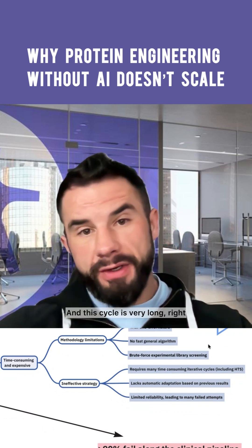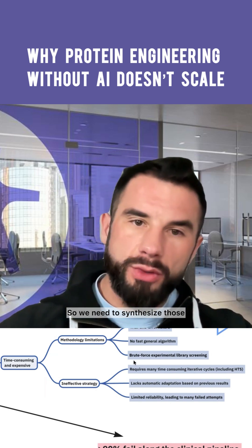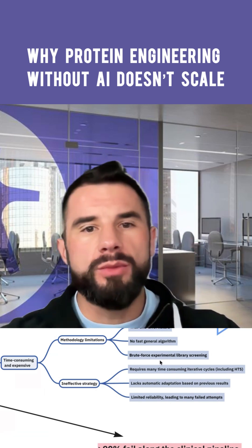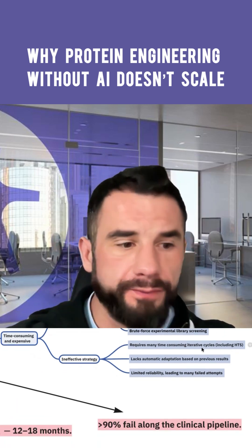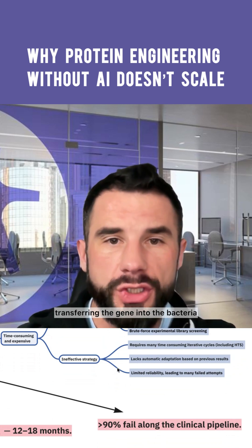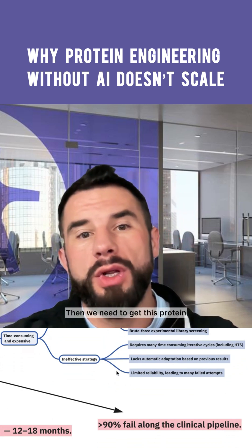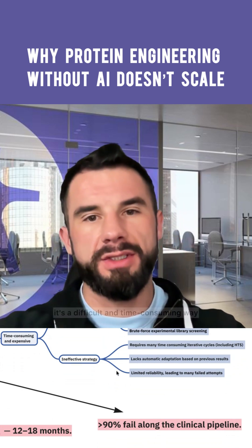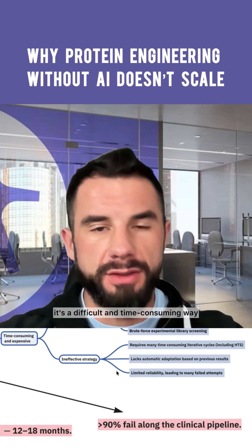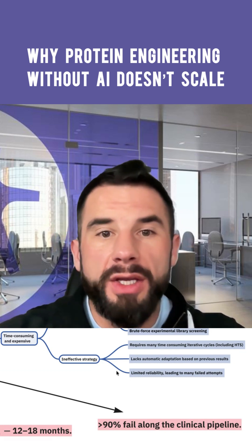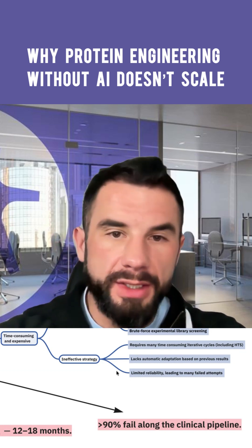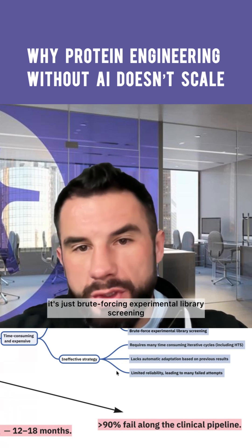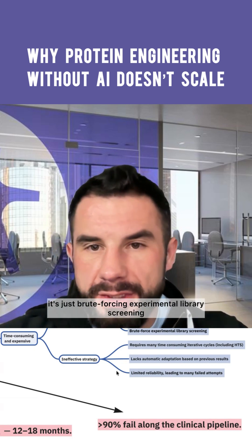This cycle is very long. We need to synthesize those peptides, we need to inject them, we need to inject vectors for transferring the gene into the bacteria, then we need to get this protein, then we need to measure its function — it's a difficult and time-consuming way. There is no fast way, there is no general way, every story is unique. Most of the time it's just brute-forcing experimental library screening.